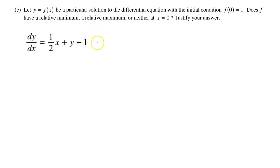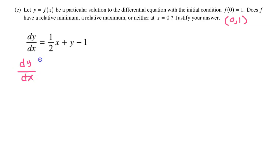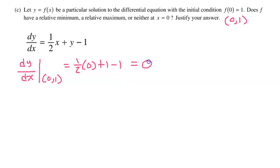For the second derivative test, step one is to confirm the first derivative equals zero at the point of interest. The initial condition f(0) equals 1 gives us the point (0, 1). Evaluating dy/dx at (0, 1): one-half times zero plus 1 minus 1 equals zero. So the first derivative is indeed zero at (0, 1).